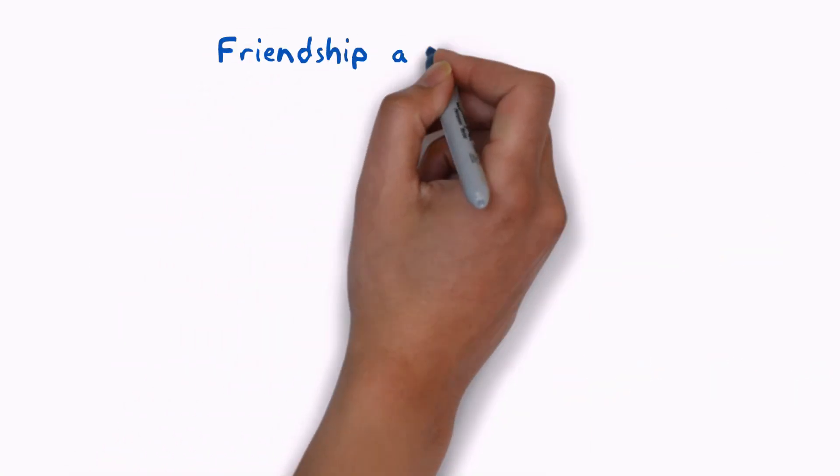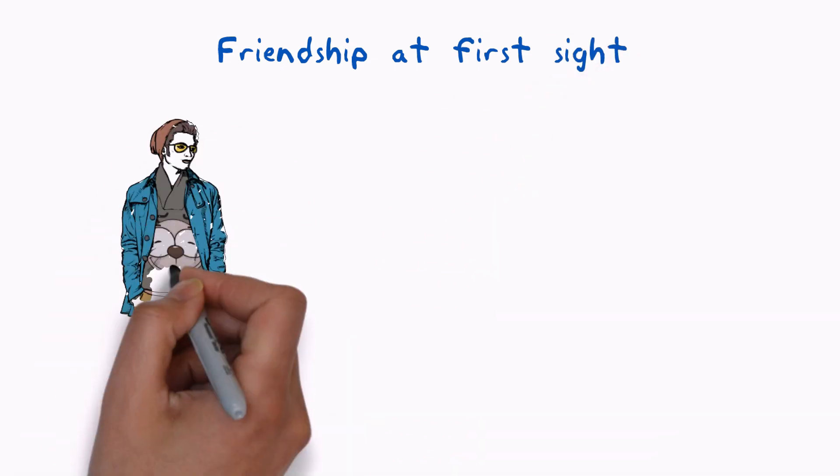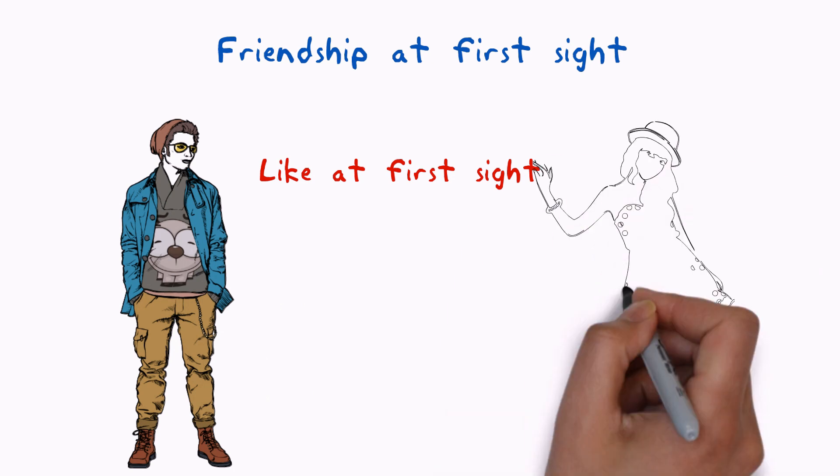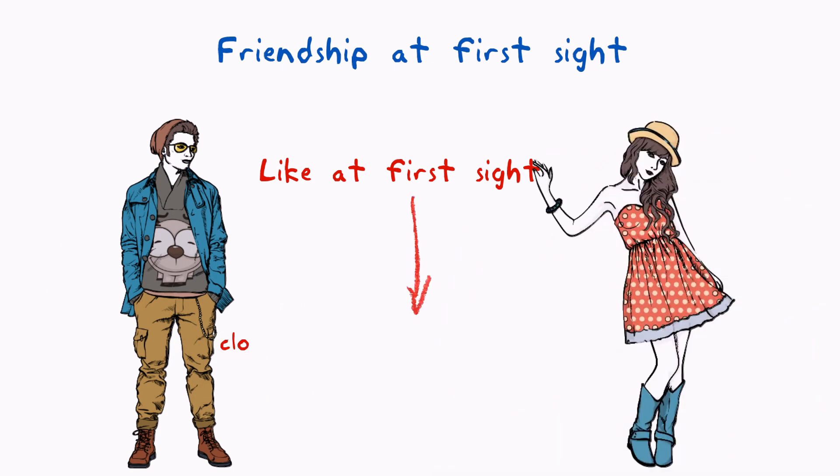Findings about friends who click immediately might also apply to romantic partnerships. In one study on friendships, people who enjoyed the first few minutes together were likely to develop a close relationship after nine weeks.